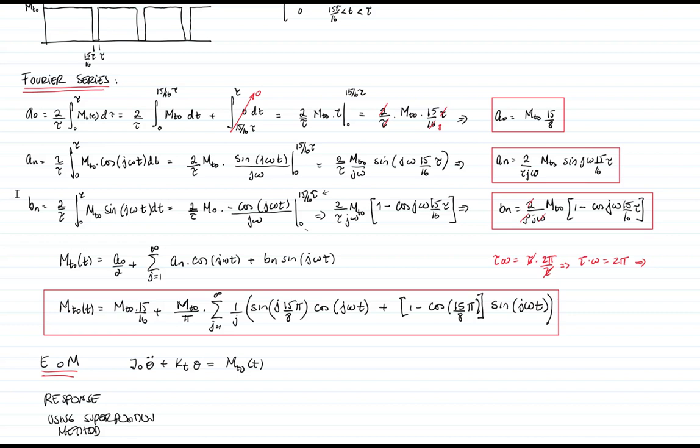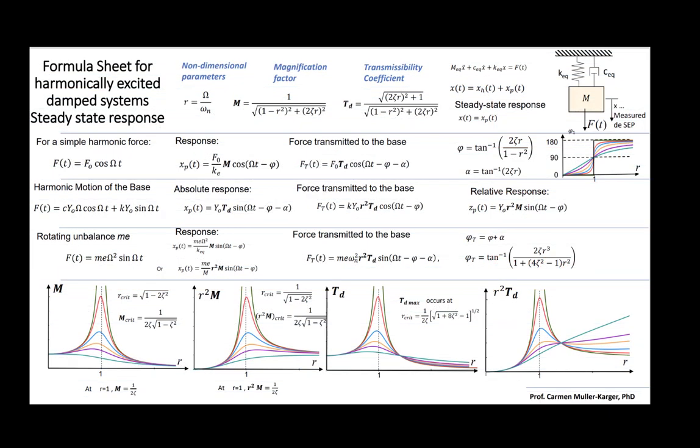I want to go back to the formula sheet to recall what is the response for a harmonic function. This is the formula sheet for harmonic excited damped system for steady state response. In our case, we have a constant force, and then we also have a force that has a constant magnitude.